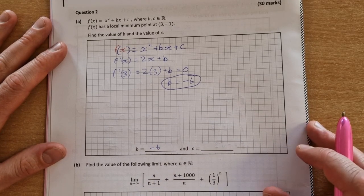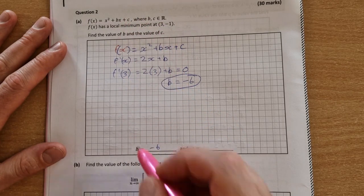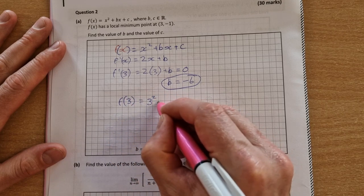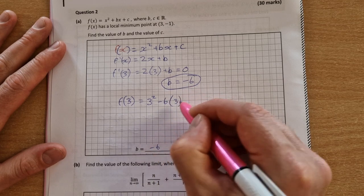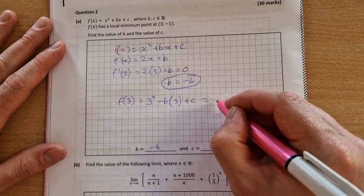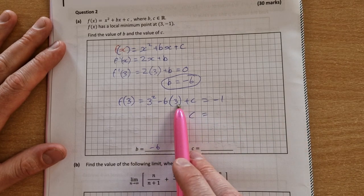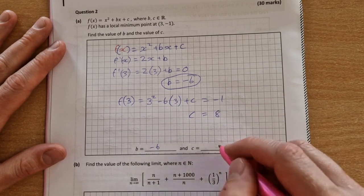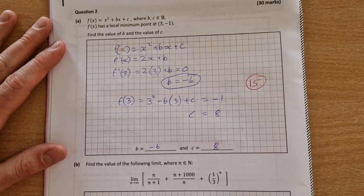And then to get the value of c we'll simply input the 3 and the output will be minus 1 in the original function. So f of 3 equals 3 squared plus b times, where b is minus 6, so minus 6 times 3 plus c, and that will equal minus 1. So c equals minus 1 plus 18 minus 9. So c equals 8. Out of a total of 30 marks that was worth 15 marks after the adjustments to the marking scheme.